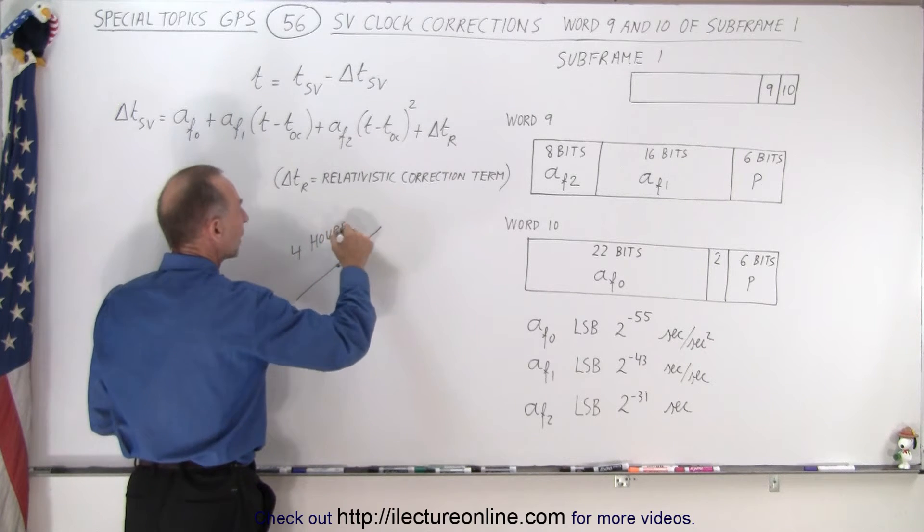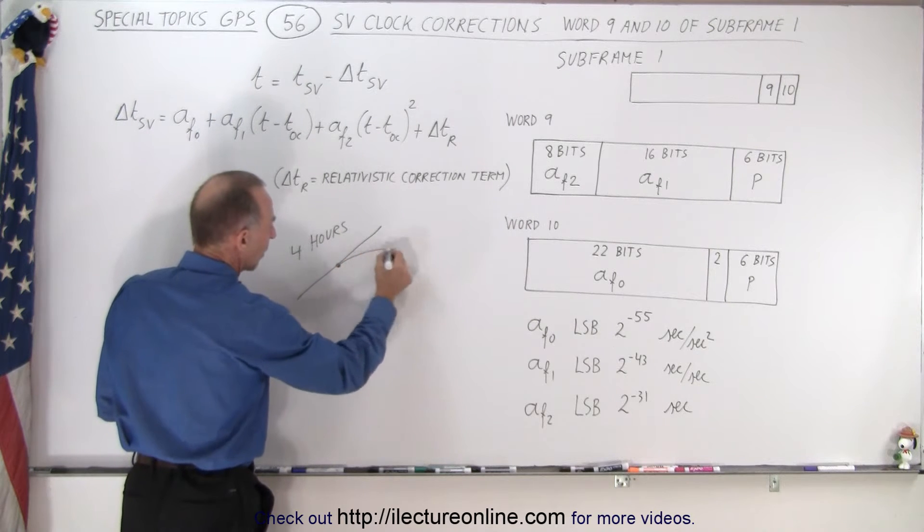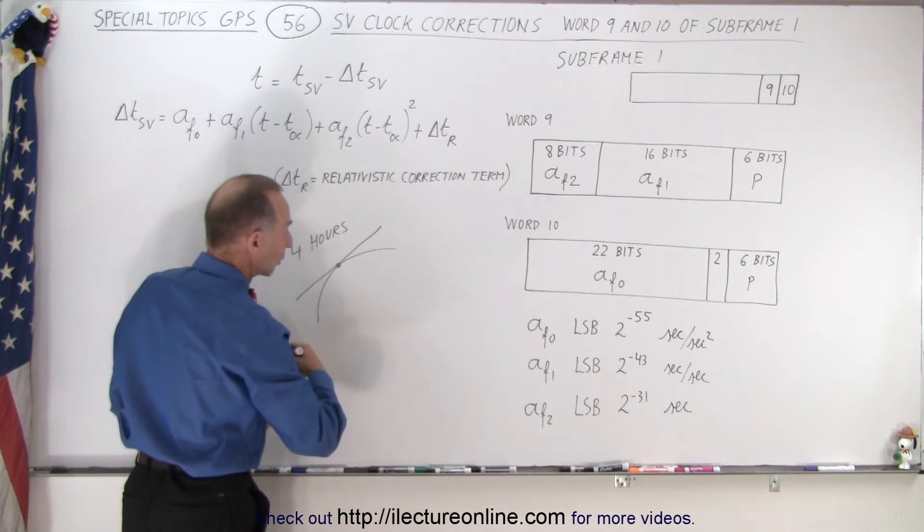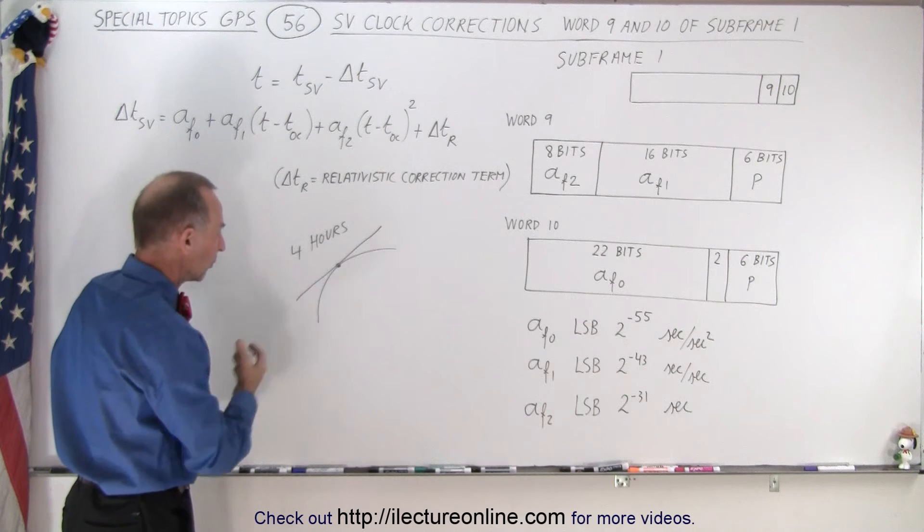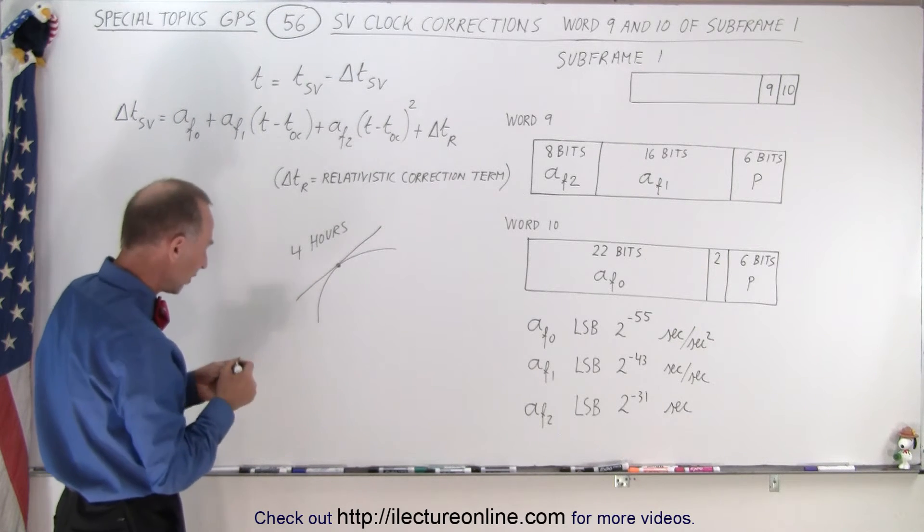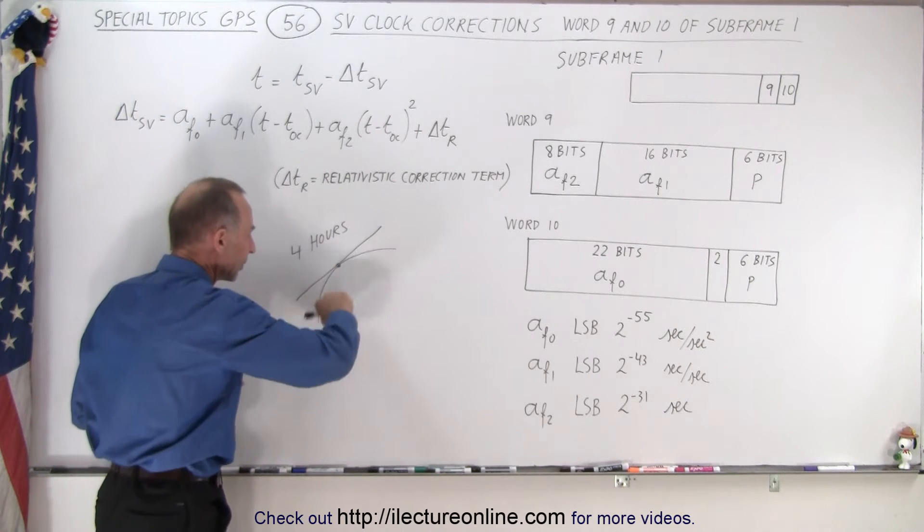But we do know that they do change and we need to account for that. The change can be modeled by a quadratic equation. A quadratic equation of course has a constant term, a power to the first term, and a power to the second term. When we can find this particular curve in equation format...